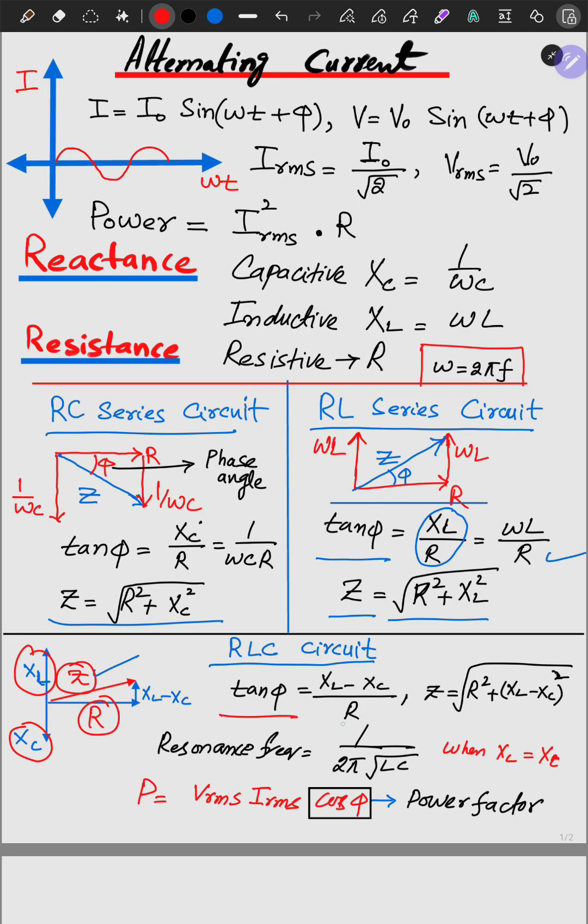The tangent phi equals XL minus XC divided by R. The impedance becomes Z is equal to R square plus XL minus XC whole square under the root.